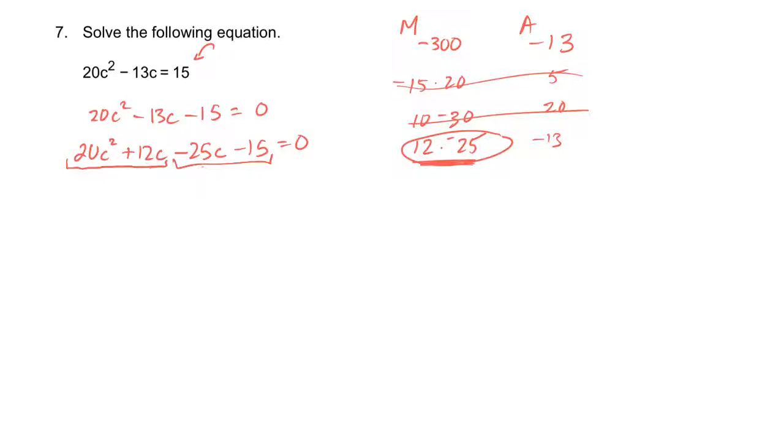but it doesn't matter as long as you be careful. Group factor. Out of the first two, I think I can take a 4c, leaving me with 5c plus 3. Out of the next one, I'm taking a negative 5. So I'll be left with 5c plus 3. Notice how that had to change signs. These are the same, so I can bring that out front.